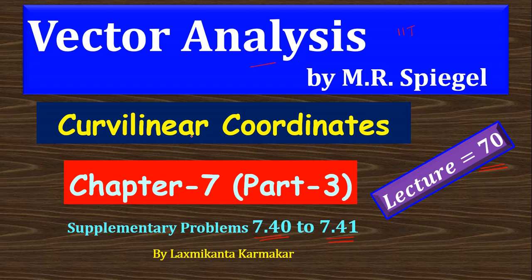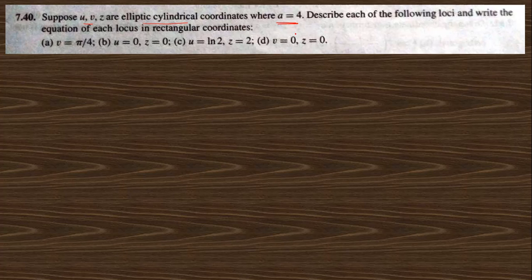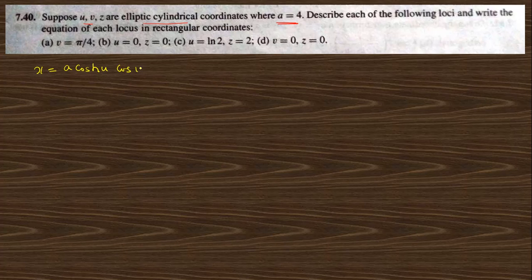In the previous lecture we already covered the previous chapter; the link will be given in the description box — you can check the description box for the previous lecture also. Let us start today's question, that is 7.40. It says: suppose u, v, z are the elliptic cylindrical coordinates where a is a given constant. The transformation is: x = a·cosh(u)·cos(v), y = a·sinh(u)·sin(v), and z = z.